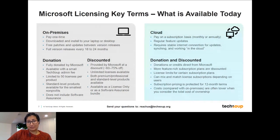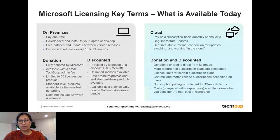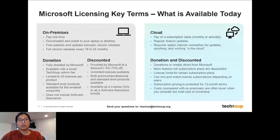Donations have a few restrictions but are offered as a full donation from Microsoft. There are still some associated administrative fees that typically go to TechSoup to help distribute and manage these programs. These are available to eligible nonprofits. The donated products are usually standard level products and right now do not include any software assurance. As a donation, you can only get up to 50 licenses per product, and some server products have an even smaller limit. There are restrictions in terms of how many you can get as a donation.